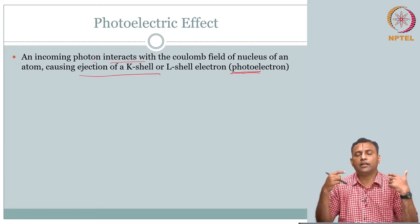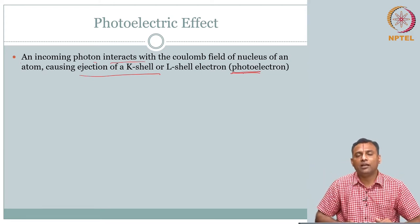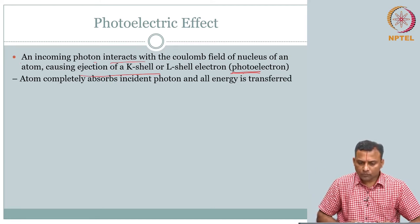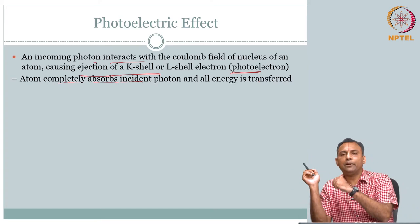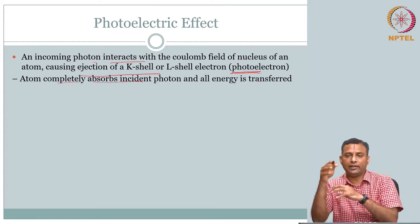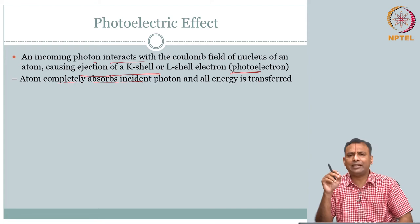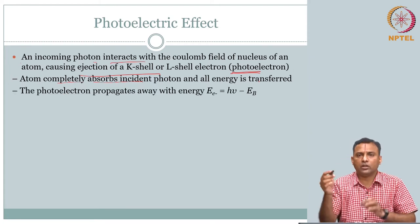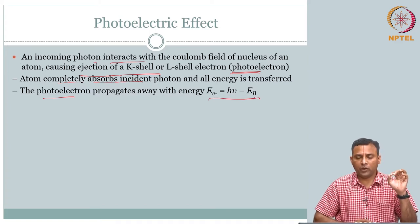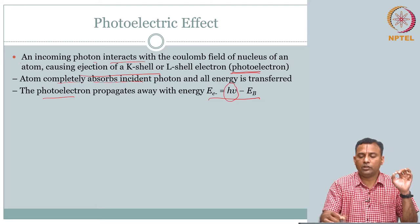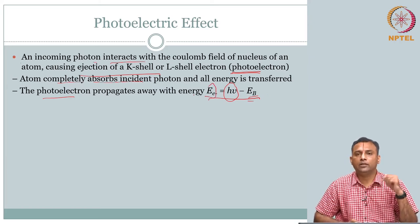This photoelectron can subsequently do whatever interactions we already covered for particulate radiation. The atom completely absorbs the incident photon and all energy is transferred. After the photoelectron leaves, the atom rearranges — there is a hole in the K shell. Rearrangement takes place, and the photoelectron propagates with energy equal to hν minus the binding energy.